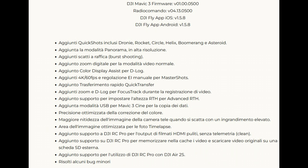Normalmente sullo smartphone riceviamo un'immagine di ritorno sbiadita, come è normale che sia perché il profilo è flat. Abilitando questa voce, l'immagine visualizzata sullo smartphone è a colori, mentre quella registrata sul drone naturalmente resta D-log. Per quanto riguarda il Master Shot, è stata aggiunta la risoluzione 4K a 60fps e la possibilità di fare delle regolazioni manuali. Adesso abbiamo il Quick Transfer che permette di trasferire le immagini dalla memoria interna del drone (8GB) o dalla SD card tramite smartphone, attivando Bluetooth e Wi-Fi. Per le modalità Focus Track, come nell'esempio dell'Active Track, è stato aggiunto uno zoom fino a 2x e la modalità D-log.